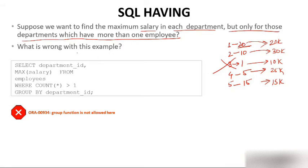What is wrong with writing: SELECT department_id, MAX(salary) FROM employee WHERE COUNT(*) > 1 GROUP BY department_id? From appearance it looks fine, but WHERE is not used with group functions. Since COUNT is a group function, you will not use WHERE with it. In order to filter by a group function, you use HAVING instead.